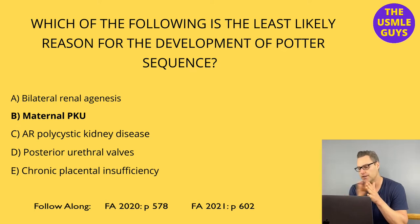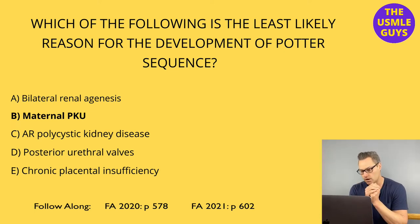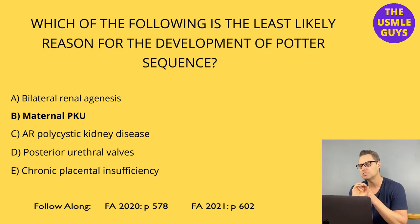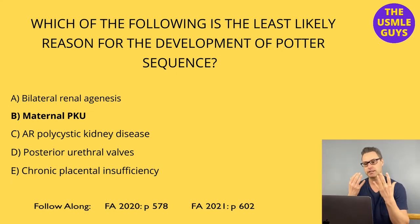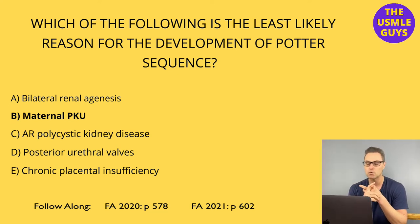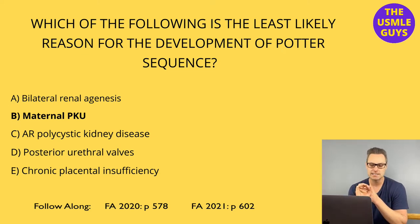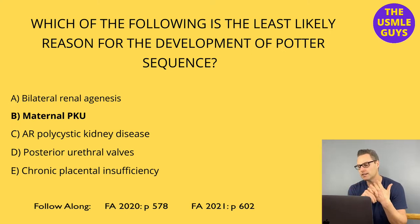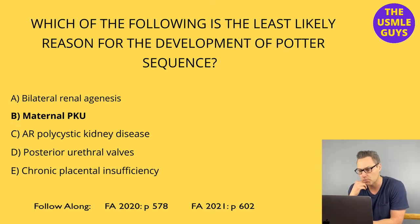When there's not enough fluid, that fetus becomes compressed. This results in a myriad of consequences such as flattened face, deformed limbs, but most dangerously is pulmonary hypoplasia, and that's actually going to be the most likely cause of death. Some of the causes of oligohydramnios can include things like bilateral renal agenesis, placental insufficiency, kidney diseases like autosomal recessive PKD, a reduction in renal output, and obstructive uropathy — you would see that with things like posterior urethral valves.